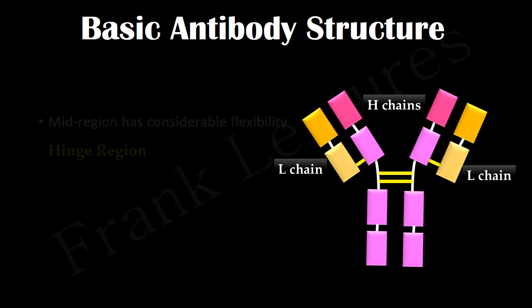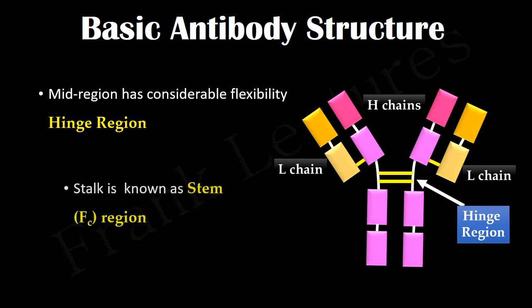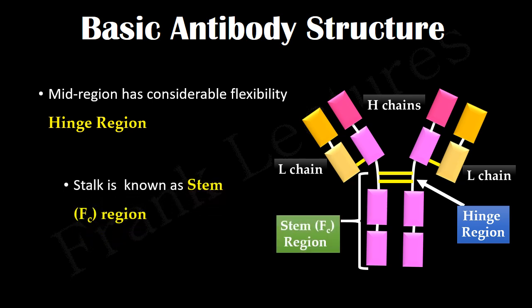The mid-region of antibody has considerable flexibility. This region is known as the hinge region. The main advantage which this region provide to an antibody molecule is the ability to adjust to different spatial arrangements of antigens or epitopes. In other words, hinge region make possible the rotation and bending of antibody molecule. The stalk of this Y-shaped antibody molecule is the stem region, also known as FC region.